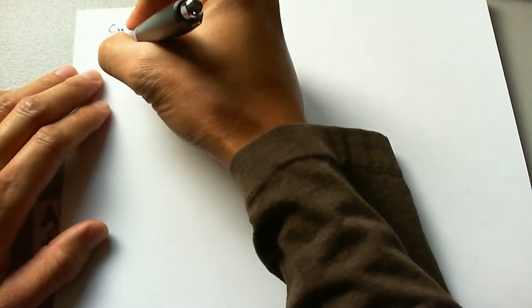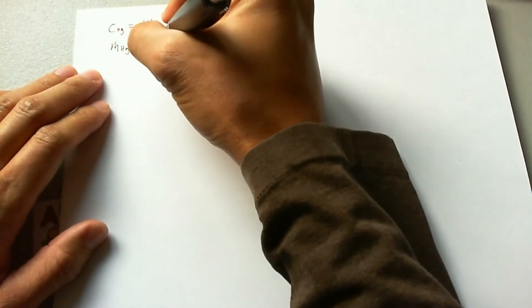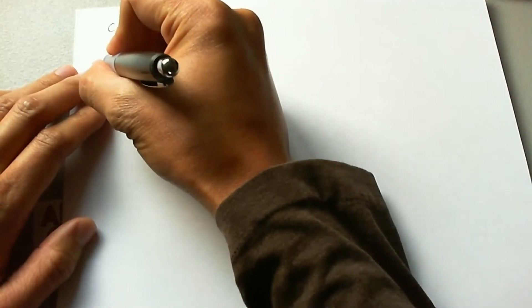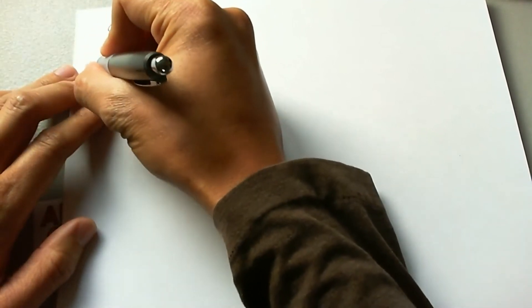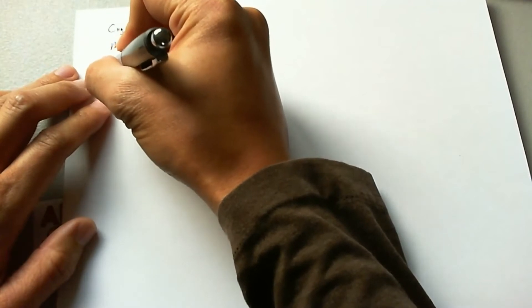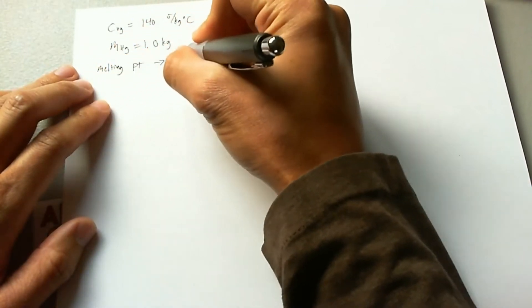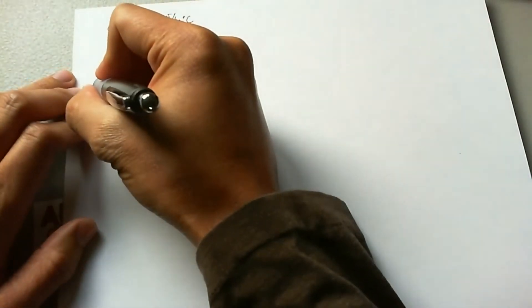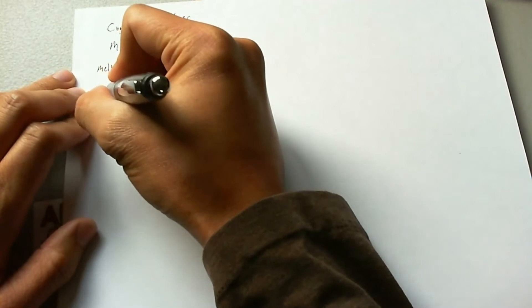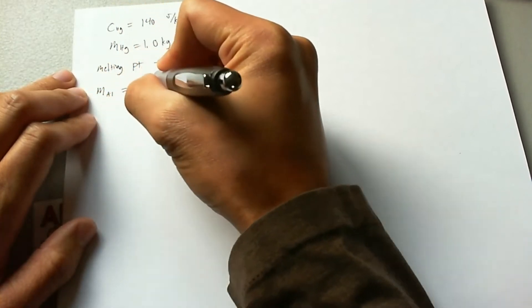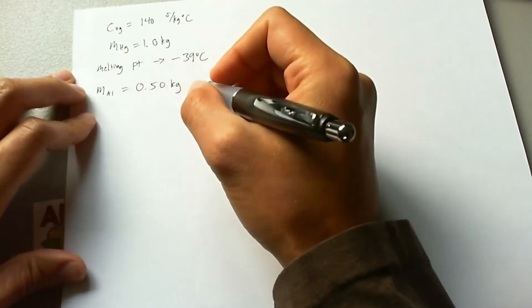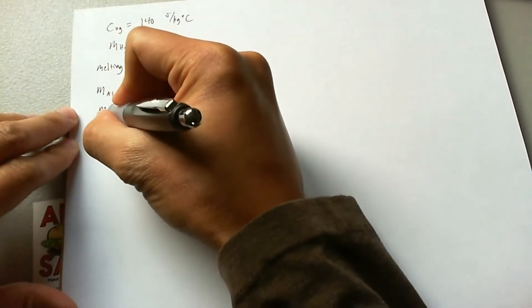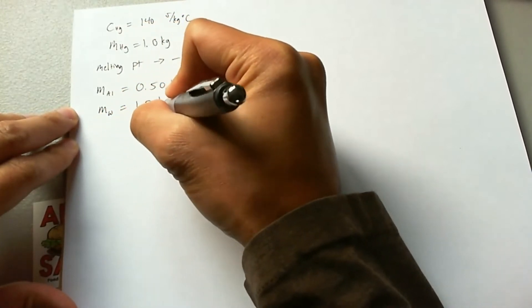We have the mass of mercury to be 1.0 kilograms, and we have the melting point to be negative 39 degrees Celsius. It's placed in an aluminum canister with a mass of 0.5 kilograms, and it is filled with water with a mass of 1.2 kilograms.